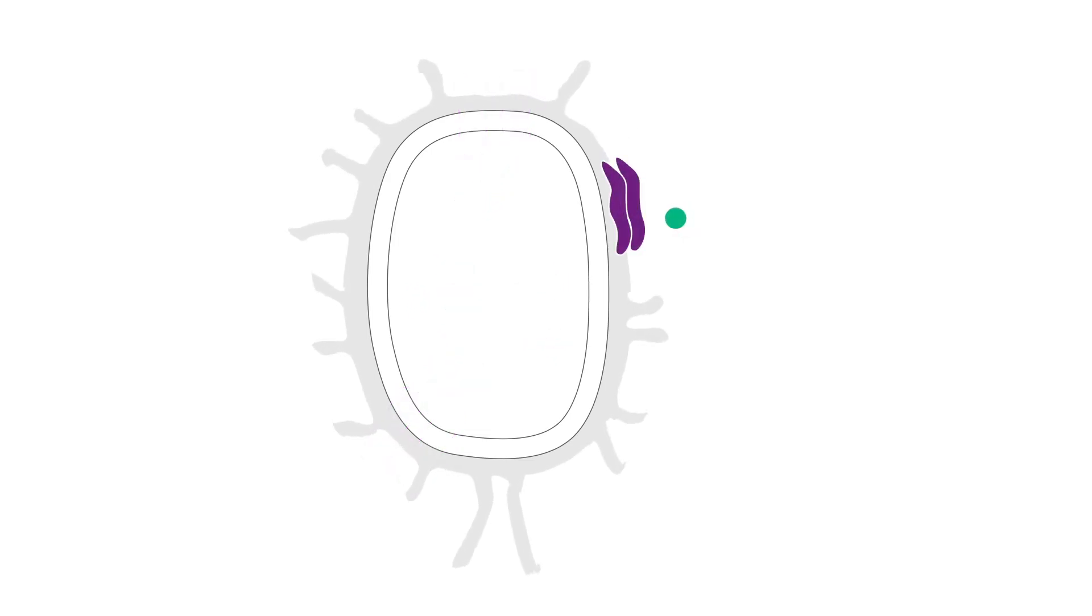Next on the list are outer membrane permeabilizers. These weaken the outer structures of the bacterial membrane, basically its outer wall, allowing antibiotic drugs to enter.